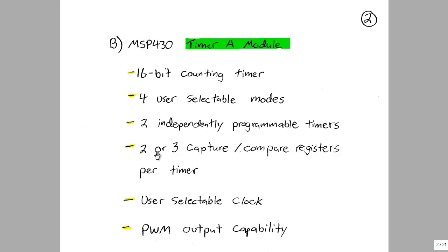There are either two or three capture compare registers per timer. So a capture compare register will store a value that can be used to either determine the maximum value that the timer will count up to, or it can be used to create a pulse width modulation output. That's actually what we'll use this Timer A module for in this lab.